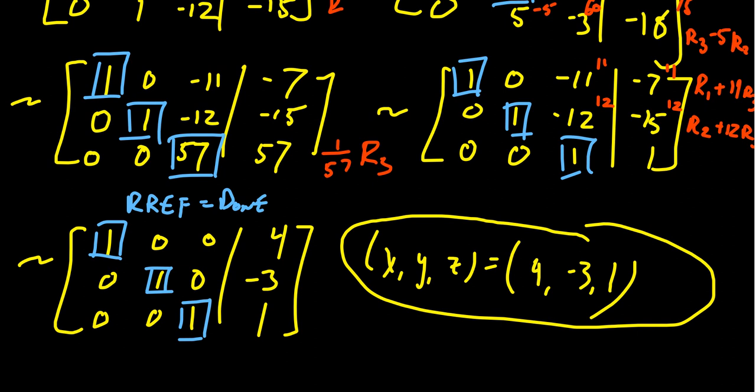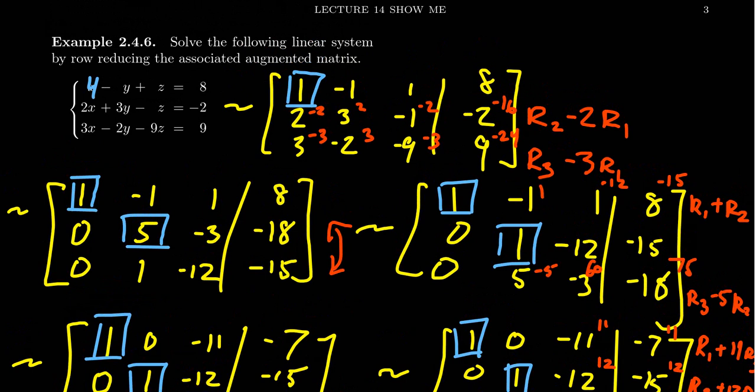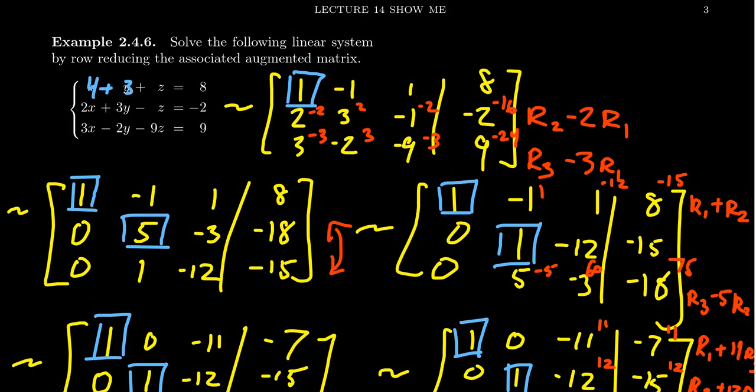If we go back to the original problem and check: 4 minus (-3), which makes this +3, and 1, that adds up to 8. For the next one, 2 times 4 is 8. 3 times -3 is -9. And then -1, which adds up to -2. 8 minus 9 minus 1 is -2. And lastly, 4 times 3 is 12. -2 times -3 is +6. -9 times 1 is -9. 12 plus 6 is 18 minus 9 is 9. This solution checks off with each of the three equations. This is the independent, consistent case, and we solved it using Gauss-Jordan elimination.